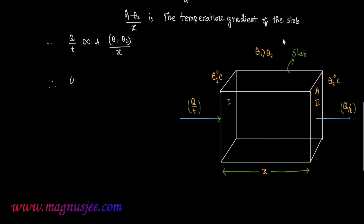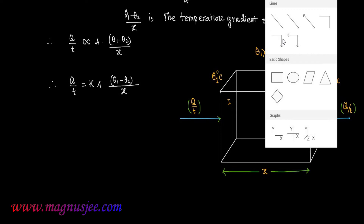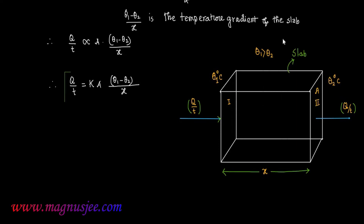Therefore, Q by T is equal to constant K times A times (theta 1 minus theta 2) divided by x, where (theta 1 minus theta 2) divided by x is the temperature gradient. This is the expression for the rate of conduction of heat through a solid.